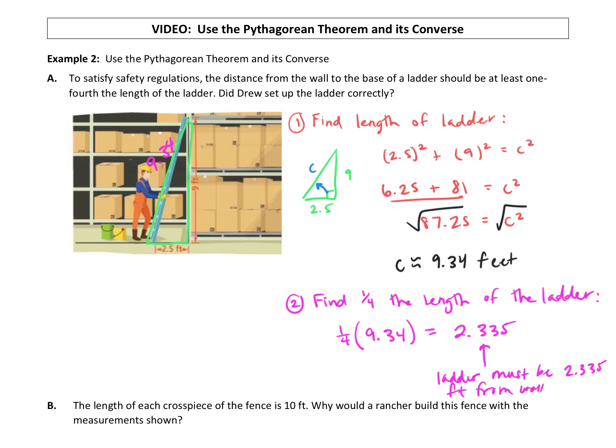So how far away is the ladder? Well, the ladder is 2.5 feet. Is that at least 2.335 feet? Because it is longer than that, we have met that safety regulation. So the ladder is 2.5 feet away. So nice job, Drew. Drew set the ladder up correctly.